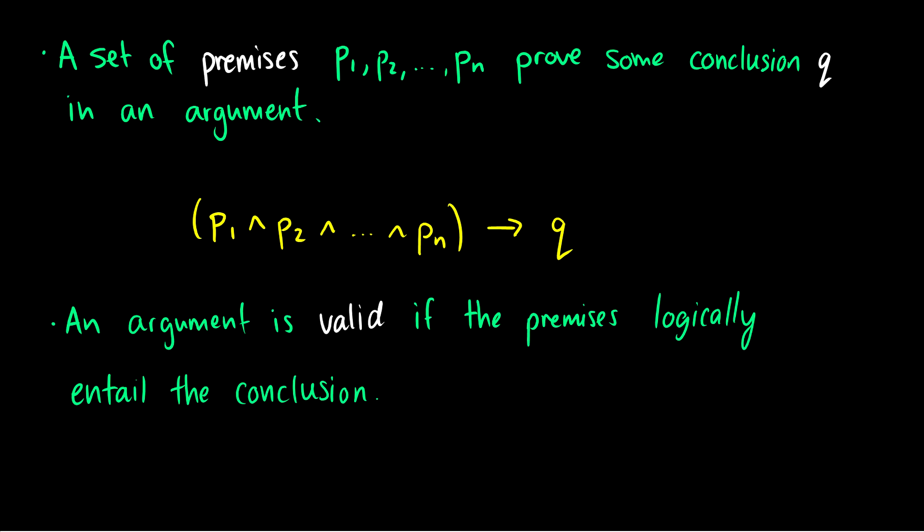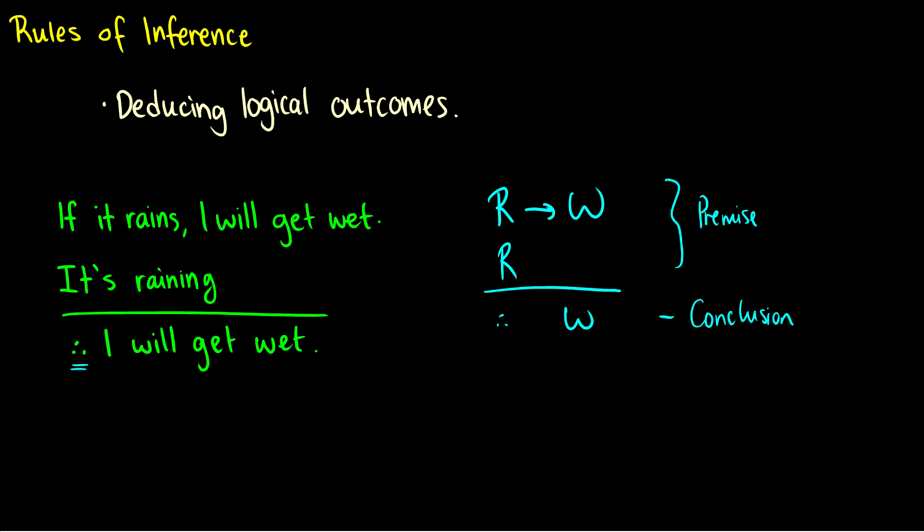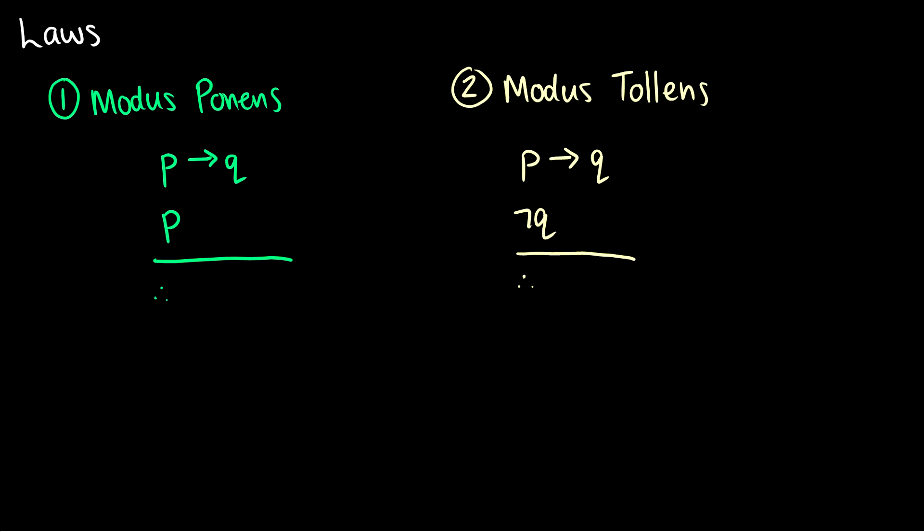An argument is valid if the premises logically entail the conclusion. So if all of our rules of inference take us from the premises to the conclusion, then it's valid. If there are improper steps, or steps that aren't logically equivalent in there, then it's invalid. And with a truth table, this would be a tautology. So all of our rules of inferences of this form are going to form tautologies.